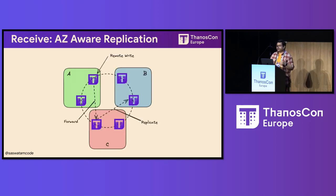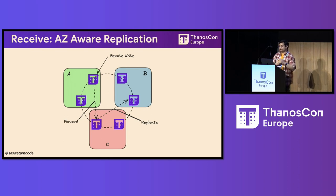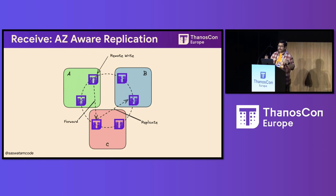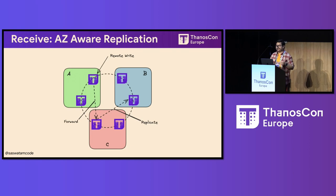Moving on to another component, receive. We introduced a feature for availability zone aware replication. This feature allows you to configure your hashing with nodes and mention the AZs or regions that they belong to. This gets factored into our Ketama hashing algorithm and we ensure that remote write requests get forwarded and replicated evenly across particular regions. That should ultimately help boost your ingestion SLOs or even disaster recovery scenarios. This is still an alpha feature, so there might be bugs, so feel free to try it at your own risk and report back to us.